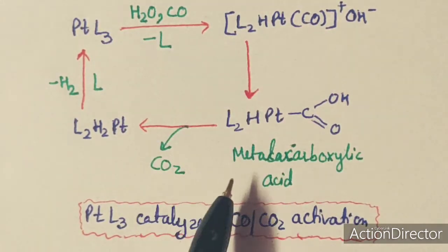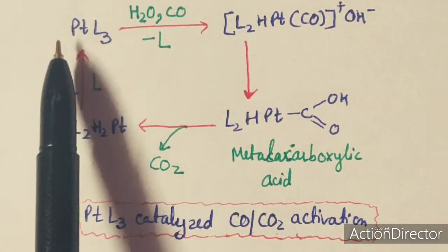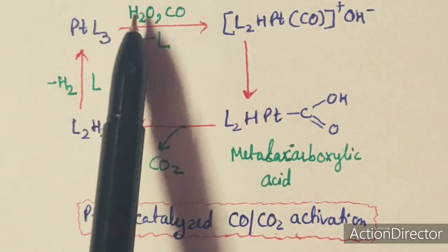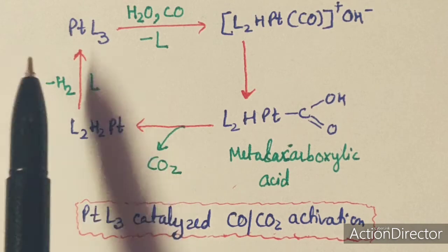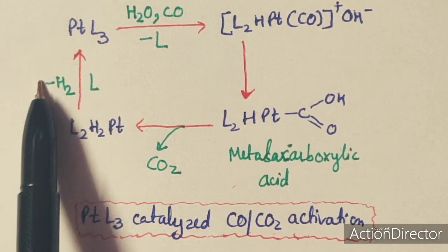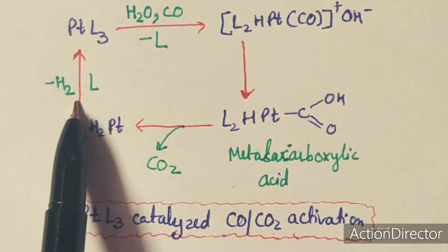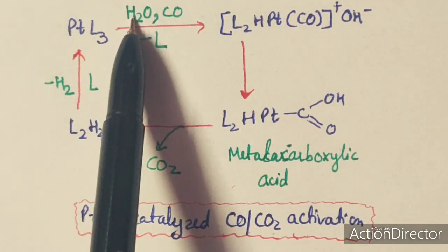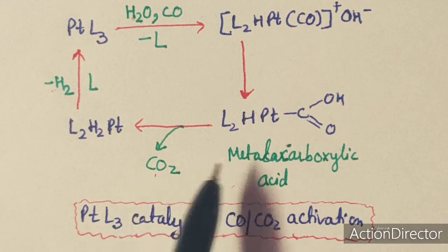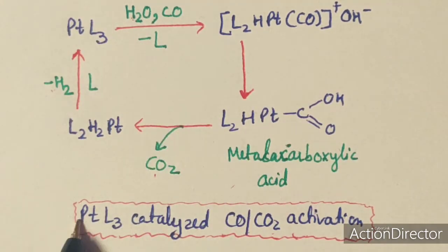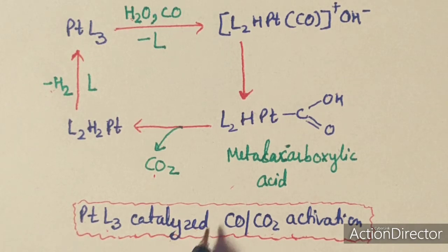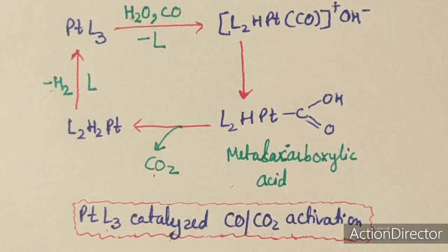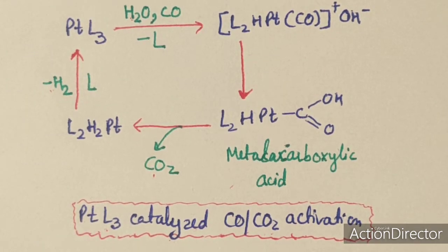The metacarboxylic acid can be directly prepared without using any base, since in the first step H2O and CO participate together. Then CO2 is removed and H2 is also removed. The ligand L that was removed is added back, completing a catalytic cycle where H2O plus CO equals H2 plus CO2. In the presence of platinum-based catalyst, the water gas shift can occur without base, activating CO and CO2.